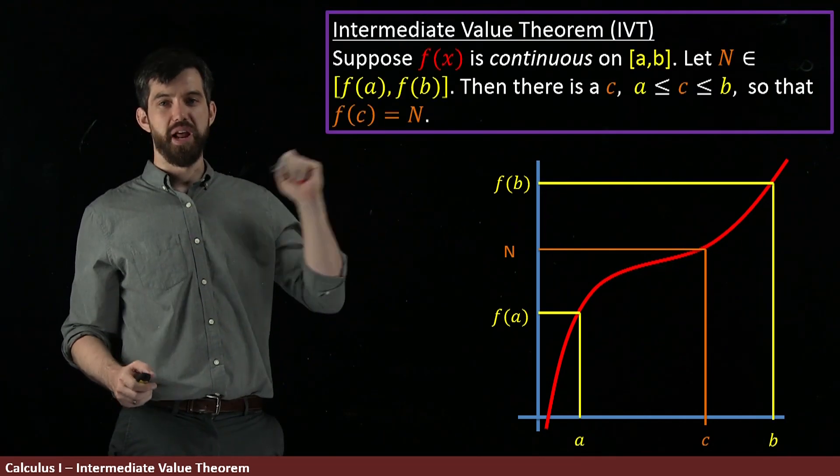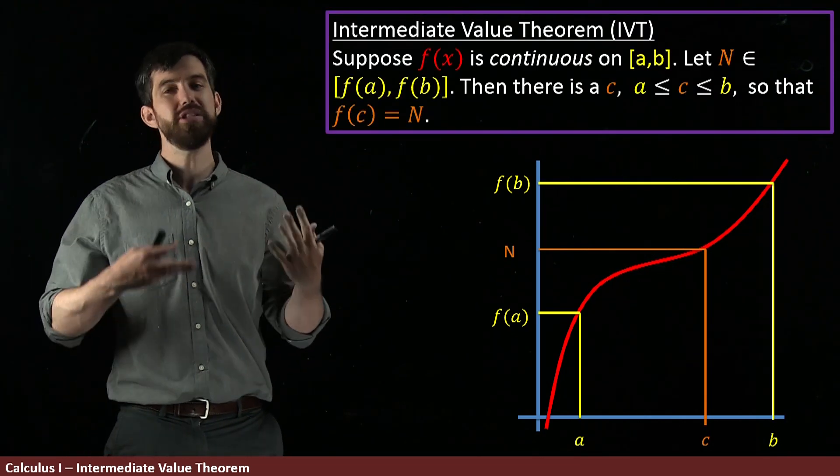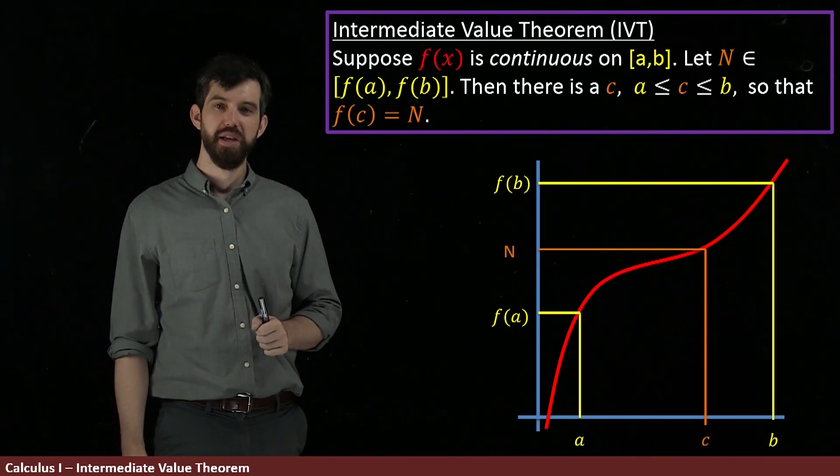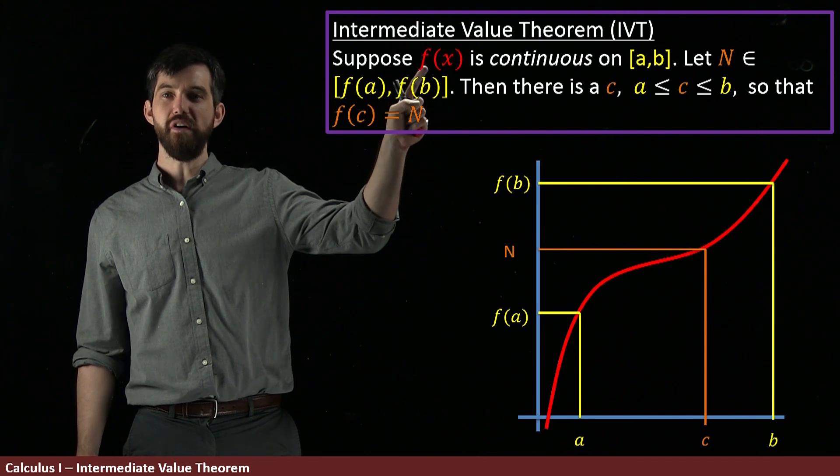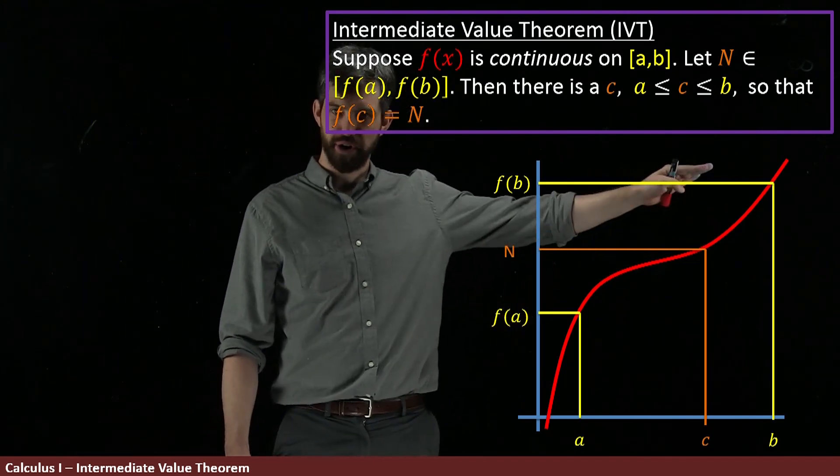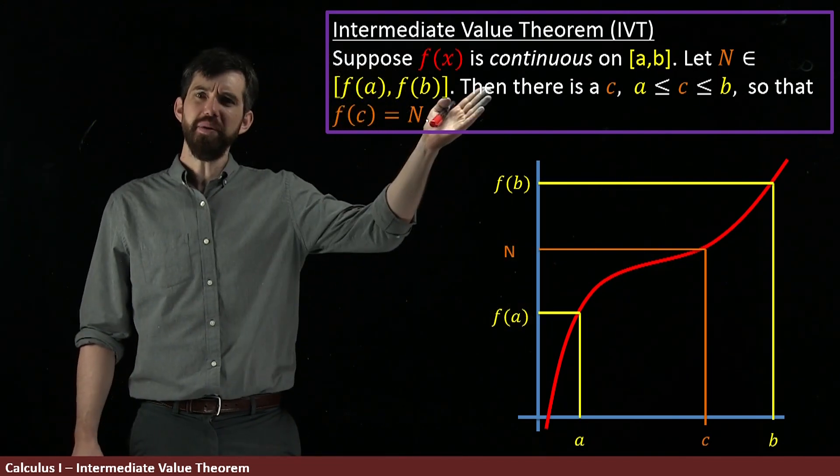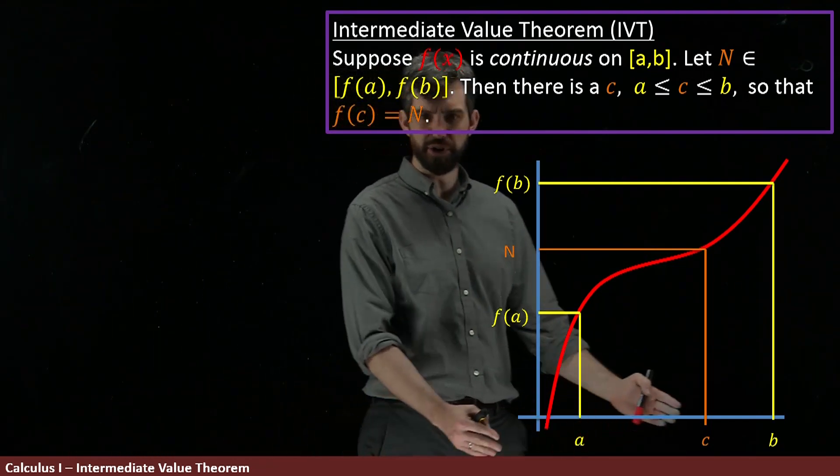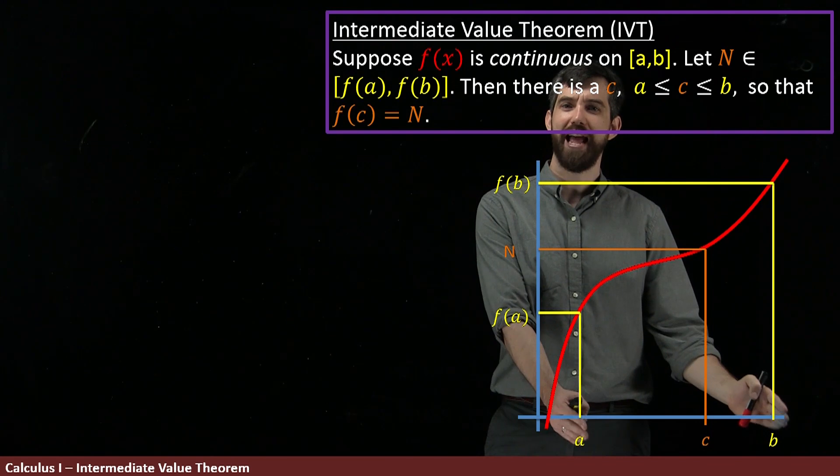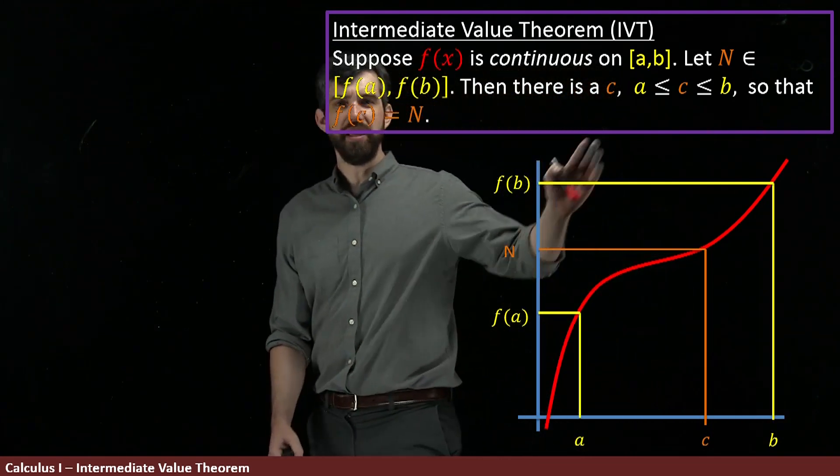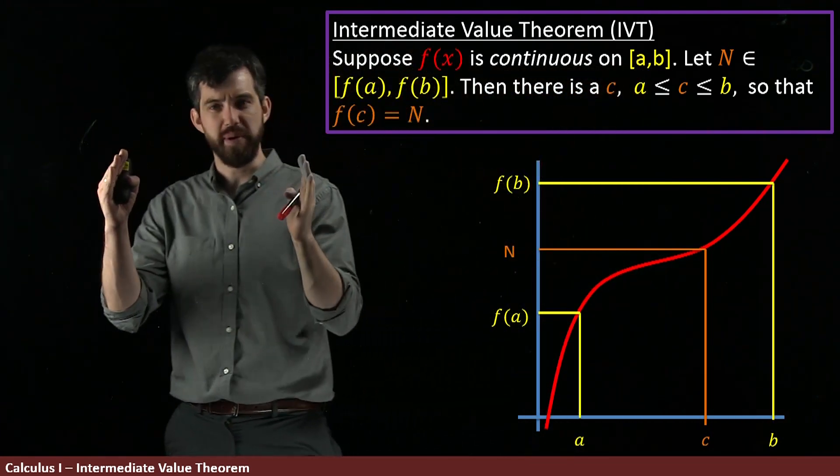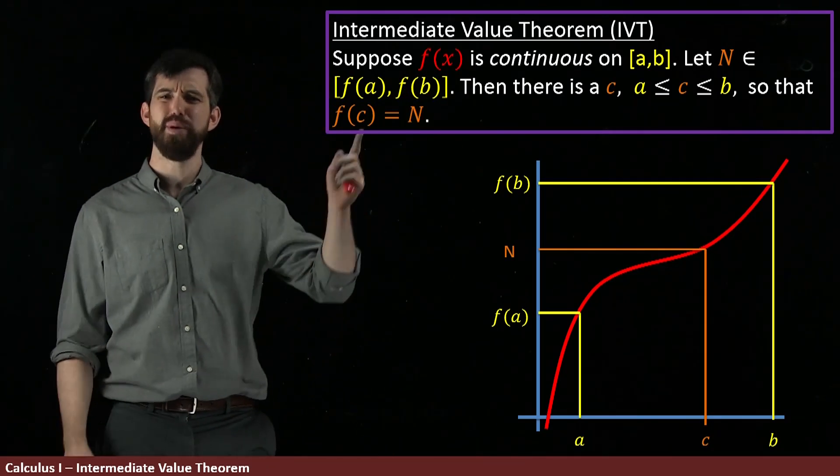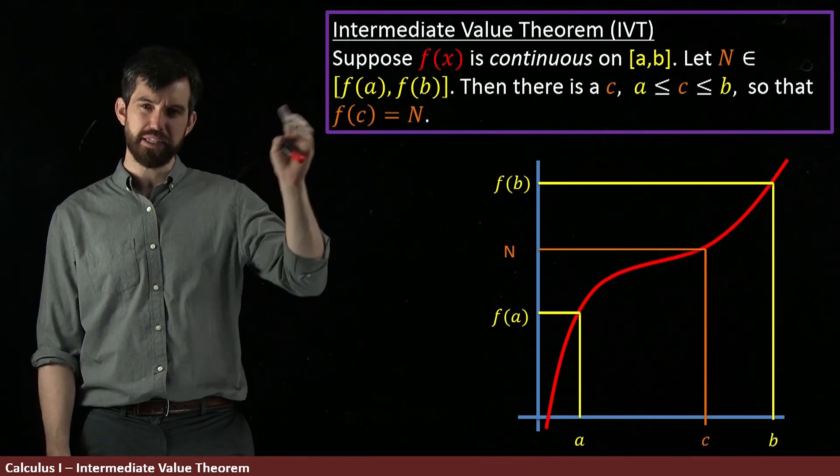So here's the statement of the Intermediate Value Theorem. It looks like a little bit of a blur of symbols, but we're going to compare it to this particular picture. The first point is that I've got a function F of X, that was my red curve here, and I'm assuming it's continuous on all the spots that we're interested in. We're choosing two spots down here in the domain, an A and a B. When I look at the closed interval [A, B], we're saying that F is continuous on that. In a little bit, we'll investigate maybe why it needs to be continuous, but let's assume that for now.